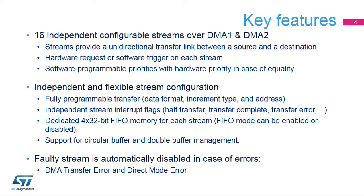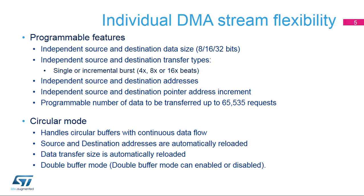A forward FIFO per stream allows performing data packing, unpacking, and burst transfers. Independent stream interrupt flags allow triggering of half-transfer, transfer-complete, and transfer-error events. In case of a transfer error, the faulty stream is automatically disabled without any impact on the other active DMA streams. For each stream, the source and destination data size format is independently configurable for 8, 16, or 32-bit packets. The transfer type for source and destination can be independently programmed in single mode or burst mode.